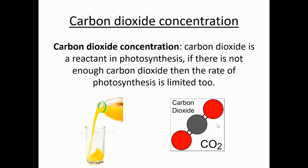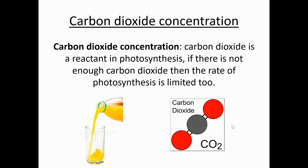Concentration crops up a lot in physics and chemistry — it's how much of something there is in a volume. Think of the difference between strong squash and weak squash: strong squash has a lot of squash per glass; weak squash has very little. Carbon dioxide is a compound in the air — CO2 has one carbon and two oxygens. The carbon in C₆H₁₂O₆ comes from CO2 in the air, so if there's not enough CO2, you can't produce as much glucose, limiting the rate of photosynthesis.